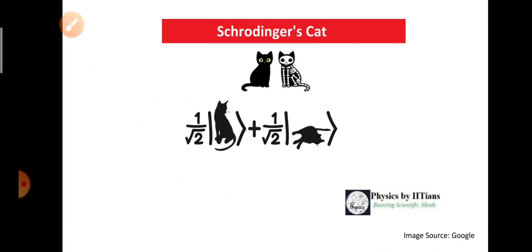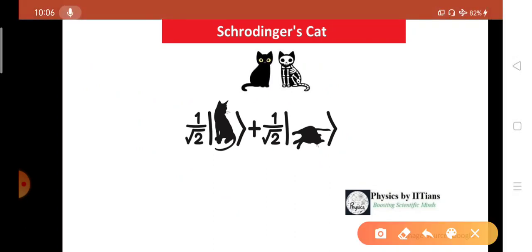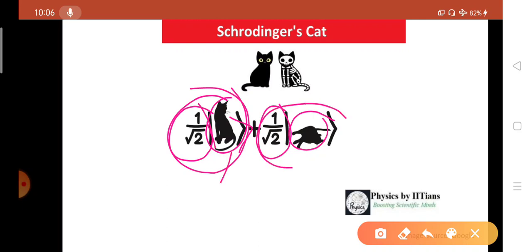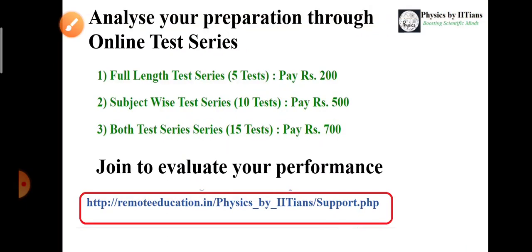In this case, let us take the Schrödinger cat. We express the complex coefficients as 1 by root 2 for the cat to be alive, the alive state, plus 1 by root 2 for the cat to be dead. This means there is a 50% probability of the Schrödinger cat to be alive or 50% probability to be dead. It is a mixed state of 50-50% to the alive state and the dead state.